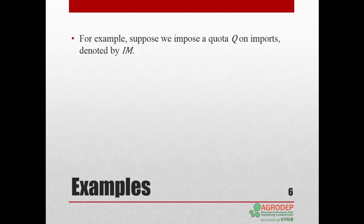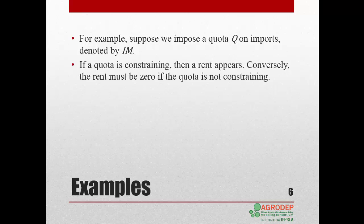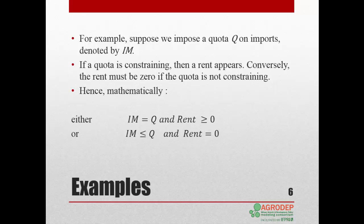For example, suppose we impose a quota Q on imports denoted by IM. There are two possibilities: if the quota is constraining, it will give rise to a rent; conversely, if the quota is not binding — meaning imports are lower than the quota — the rent is zero. In mathematical terms, either the quota is binding (imports equal the quota and the rent is positive), or the quota is not binding (actual imports are below the quota and the rent is zero).